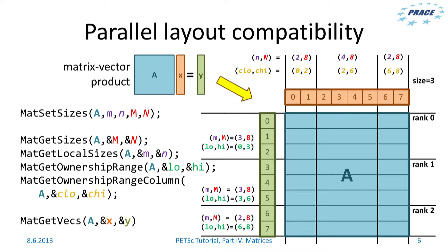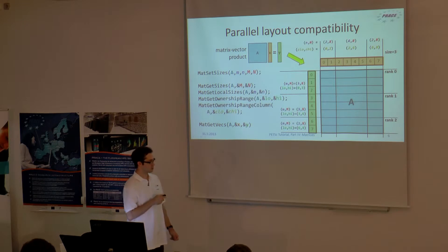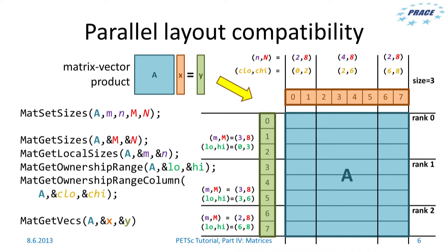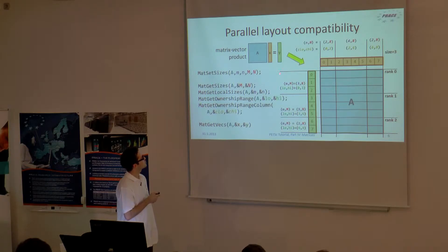For example, in this case rank 2 has column ownership range 6 to 8. And when you have this matrix layout, you can call MatGetVecs to get new vectors x and y which are automatically compatible with the A matrix. So you can then call this matrix vector product.